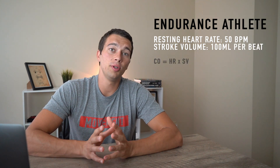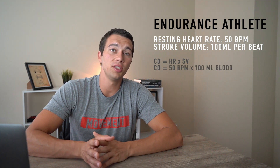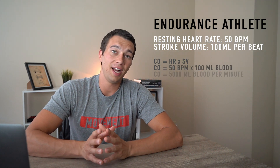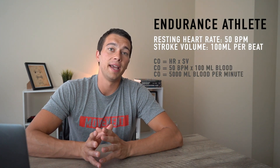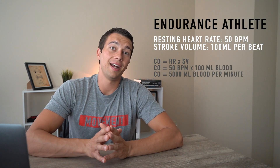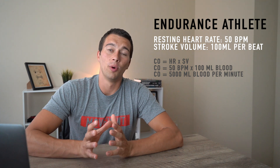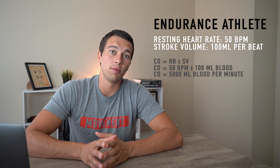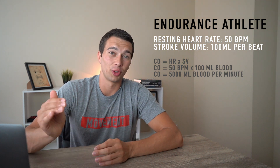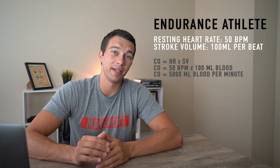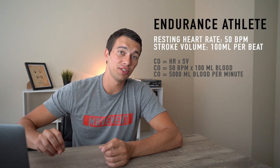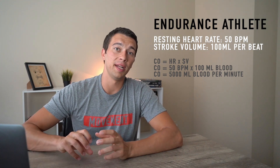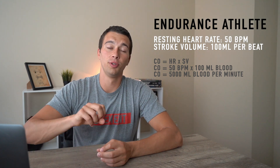So 50 beats per minute times 100 milliliters gives us 5,000 milliliters per minute, equivalent to five liters per minute. Whether we are trained or untrained, our body is going to get about five liters of blood per minute pumped through the heart and through the body.